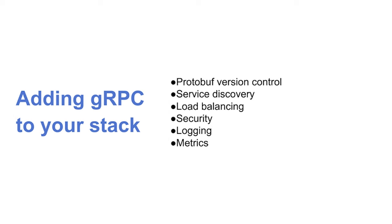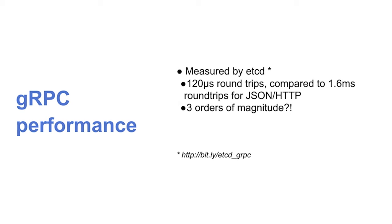A question about performance: what kind of gains can we see over traditional XML/SOAP? There's no single number, but one concrete example is etcd — a service discovery tool from CoreOS. In etcd version 3, they moved from JSON over HTTP to gRPC and saw some very interesting performance numbers suggesting three orders of magnitude faster, which is remarkable. Your mileage may vary, but those are the kinds of gains that can be seen.